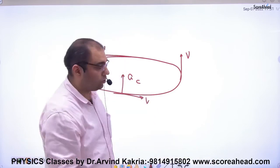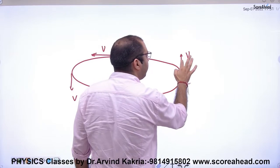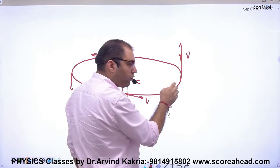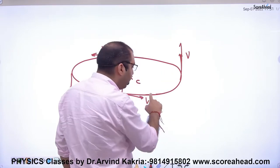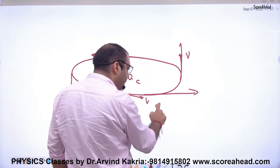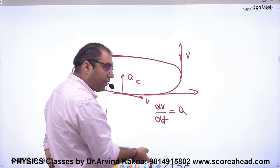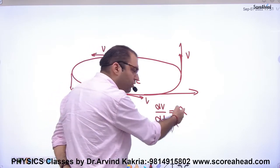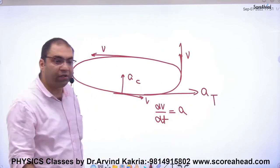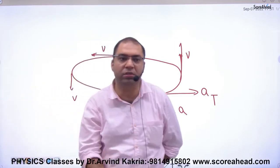In non-uniform circular motion, the speed changes — say from one to two meters per second. Here the velocity changes in the tangential direction, so dv/dt is not zero. This means an additional acceleration arises: tangential acceleration. Tangential acceleration arises when the velocity value changes.